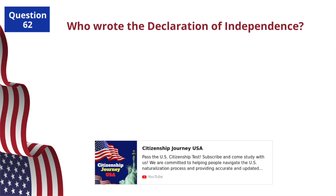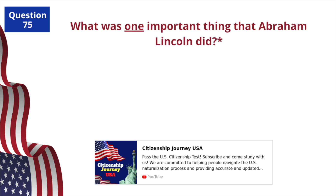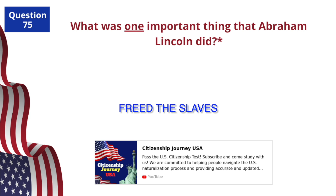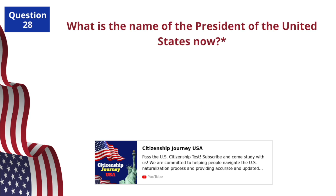Who wrote the Declaration of Independence? Thomas Jefferson. What was one important thing that Abraham Lincoln did? Freed the slaves. What is the name of the President of the United States now? Joe Biden.